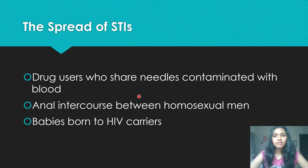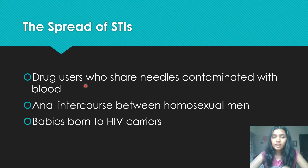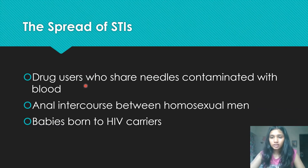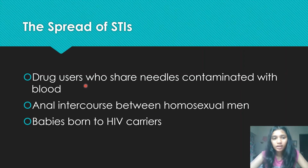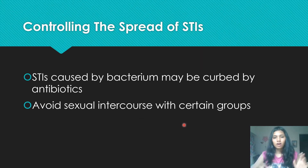So, the spread of STIs. There are three most common ways. One is by drug users who share needles contaminated with blood — if one drug user has HIV and the needle is inserted into their flesh, some blood will be on the needle, and if another drug user uses the same needle, they'll be injecting that blood into their own body. Two is anal intercourse between homosexual men. Three is babies born to HIV carriers. You need to know all three; usually this counts for three marks.